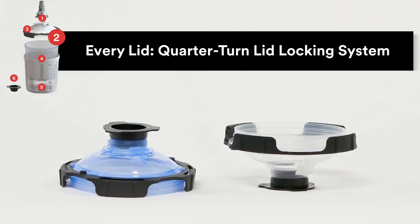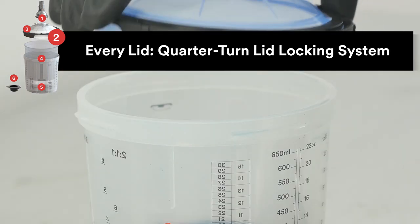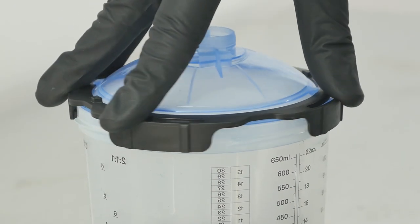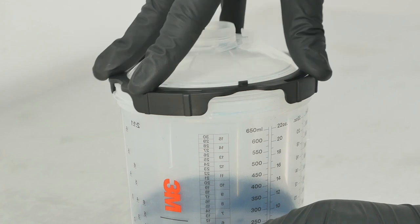Second, the system's lid has been redesigned to improve overall performance. Every 3M PPS Series 2.0 lid now includes a quarter-turn lid locking system. This limits the potential for contamination from a dirty collar and eases assembly and disassembly of the lid.